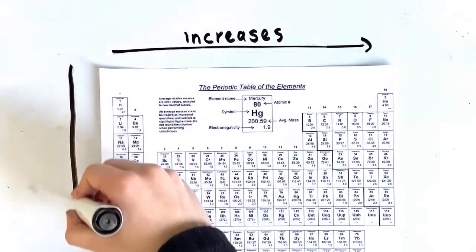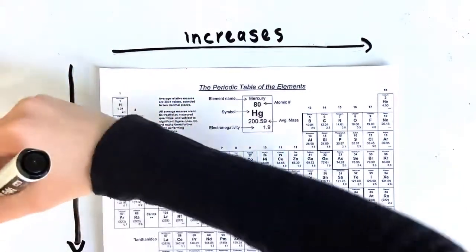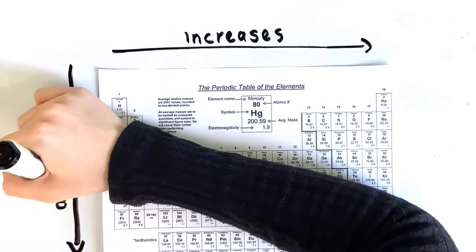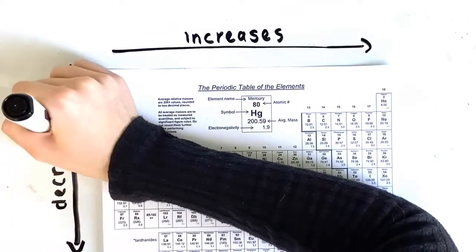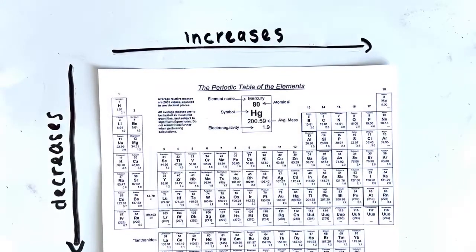The stronger the attraction, the more energy it takes to remove an electron. As you move down a group, the first ionization energy decreases. This is because the distance from the electrons to the nucleus increases, so the electrons are further away from the nucleus, which makes the attraction from the nucleus to the electrons less strong. If the attraction is weaker, it requires less energy to remove an electron.